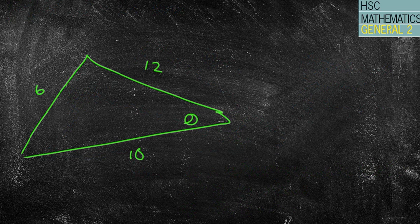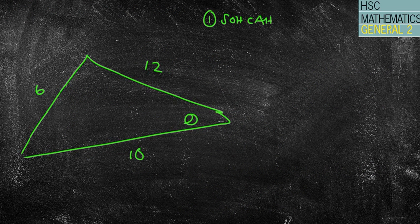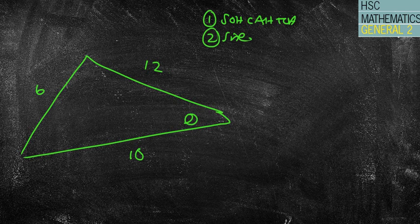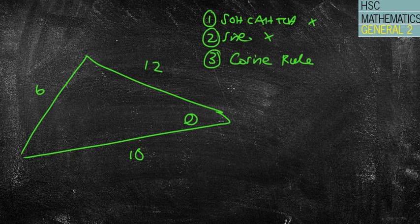Now in this case, once again I'm going through my rules. SOHCAHTOA we cannot use because it's not right angled. I'm going to look for the sine rule. We've got one angle and opposite side, but no other angles for the opposite side, so that can't work either. So we're going to look for the cosine rule. I look to my formula sheet—I know I'm looking for an angle, so it won't be the a² = b² + c².